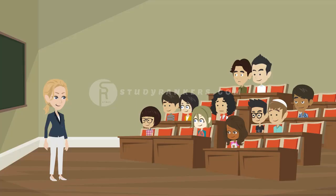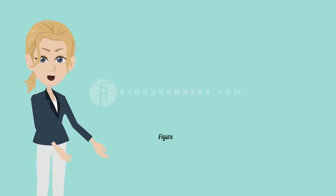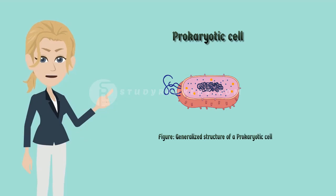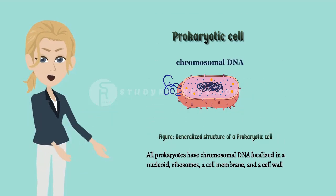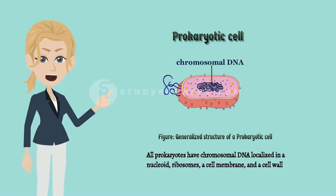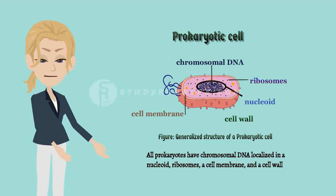Ma'am, can you give us detailed information about these two cells? Sure, Anand. We will start with general structure of a prokaryotic cell. This figure shows the generalized structure of a prokaryotic cell. All prokaryotes have chromosomal DNA localized in a nucleoid, ribosomes, a cell membrane and a cell wall.